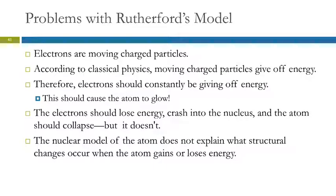So electrons are moving charged particles according to Rutherford's model. And according to classical physics, moving charged particles give off energy. If these electrons are giving off energy, then they should be probably causing the atom to glow all by itself, which we know that doesn't happen. And if they're giving off energy, they're losing energy, then eventually they're going to run out of energy and crash into the nucleus, and the atom should collapse. But it doesn't. So the nuclear model doesn't explain what's going on when the atom gains or loses energy as it does in these element lamps. Rutherford's model doesn't explain that.